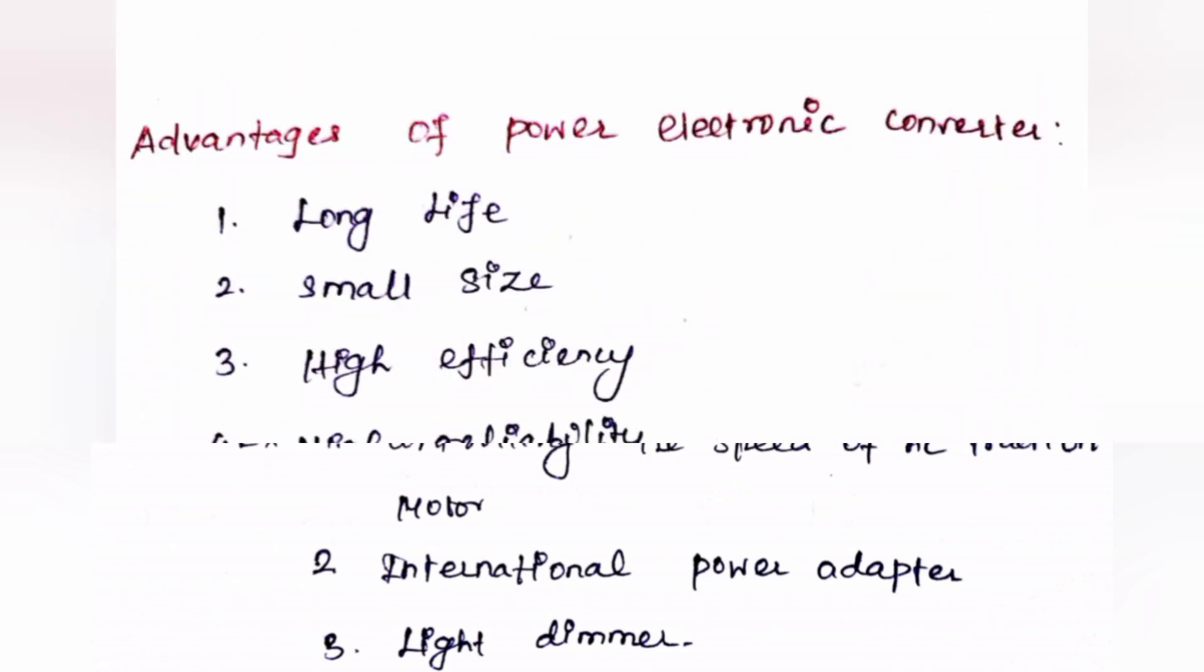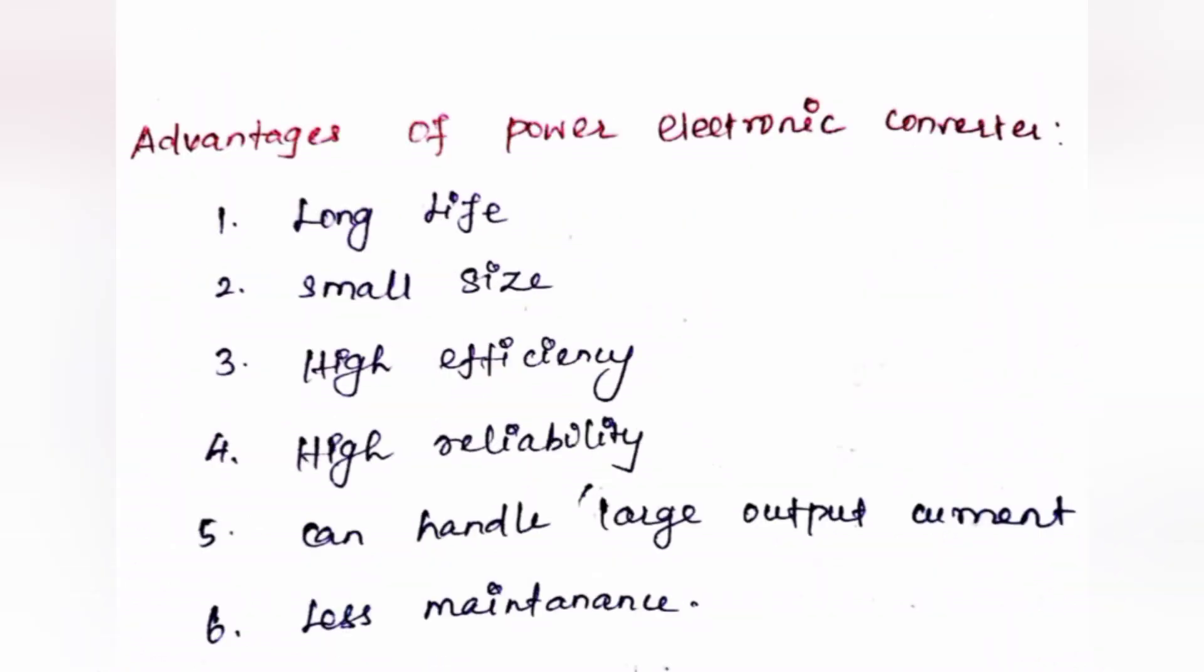Last one, advantages of power electronic converters. What are the advantages? First, long life. Second, small size. Third, high efficiency because loss is low in power semiconductor devices. Fourth, high reliability. Fifth, can handle large output current. And sixth, less maintenance due to the absence of moving parts.